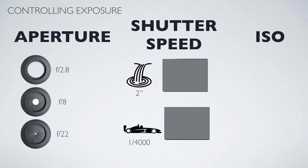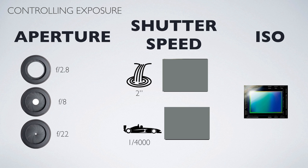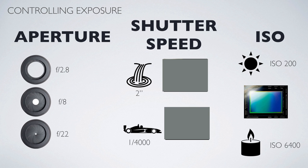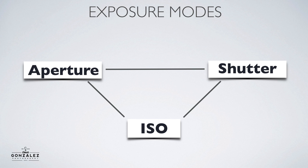The third thing is ISO. ISO is how sensitive your sensor is to absorbing light. If you're in a very bright area you want a low ISO like 200 - Fuji's native ISO is 200. If it's dark you may want to go up to a higher ISO like 6400.